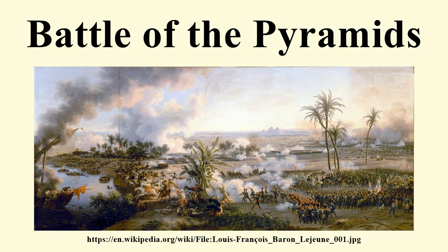Battle: Napoleon ordered an advance on Murad's army with each of the five divisions of his army organized into hollow rectangles, with cavalry and baggage at the center and cannon at the corners. The French divisions advanced south in echelon, with the right flank leading and the left flank protected by the Nile. From right to left, Napoleon posted the divisions of Louis-Charles-Antoine de Seix, Jean Renier, Duguay, Bile, and Louis-André Bon.